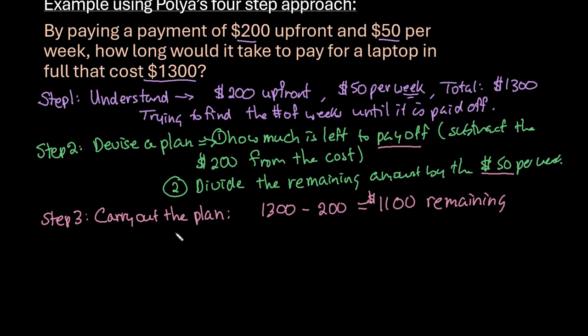So our second part was to divide the remaining amount. So we're going to take and we're going to do $1,100 and we're going to divide that by $50 per week.